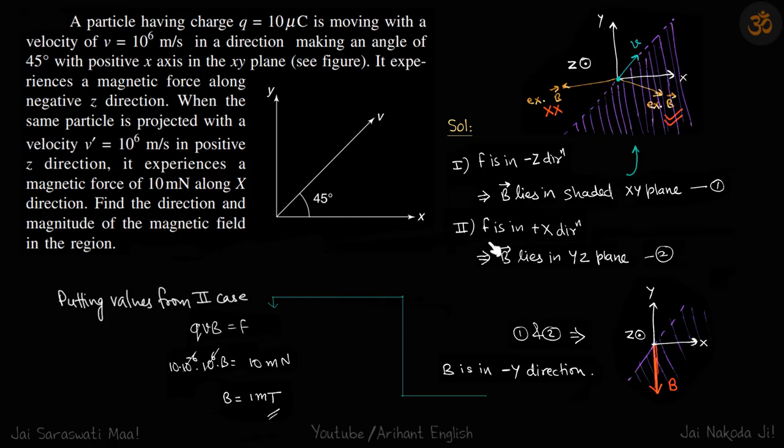Now the second condition is that the force is in plus x direction. So again, the field will be perpendicular to the force—it will be in the yz plane somewhere. If you take the intersection of the yz plane and this shaded xy plane, you will get a line like this. So B has to be on this line, and the direction of B therefore is in minus y direction.